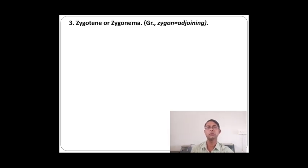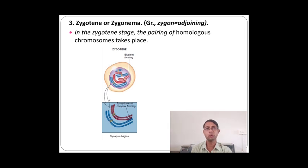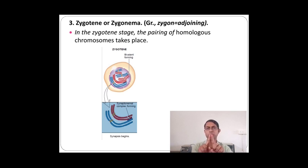After leptotene, the third phase begins — zygotene or zygonema. 'Zygon' means adjoining, meaning neighbors lying next to each other. In the zygotene stage, pairing of homologous chromosomes takes place. Two similar chromosomes come together and start to produce the synaptonemal complex. The two parts of the two homologous chromosomes begin to join, and synapsis begins in this stage.